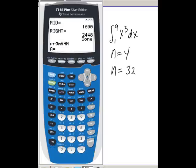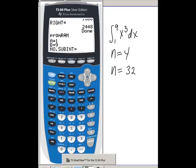Left endpoint is 1, the lower bound. The upper bound is 9. The number of subintervals is 32.